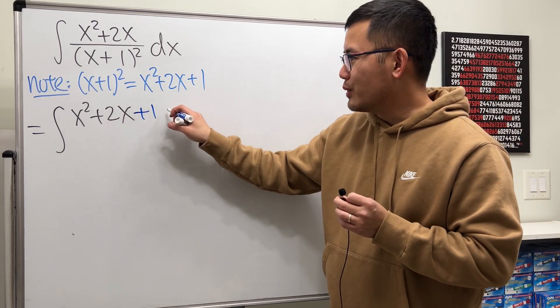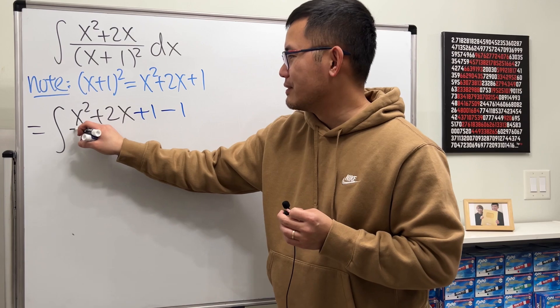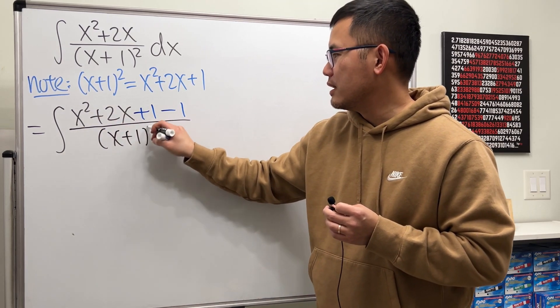No, don't worry. Let's just go ahead and minus 1 after that. Then it's okay. And then we still have this over x plus 1 squared.